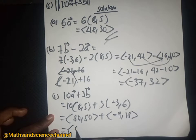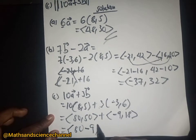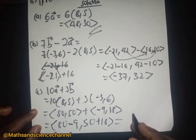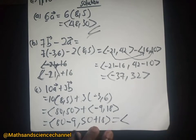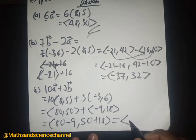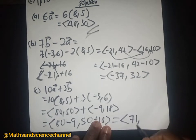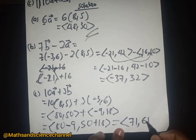Adding the components together: 80 plus (-9) equals 71, and 50 plus 18 equals 68. So the vector 10a + 3b equals (71, 68).